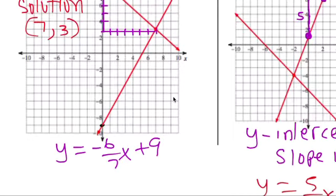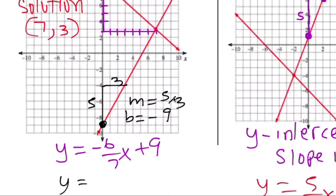We do the bottom one. So the y intercept is negative 9. And the slope is up 4, 5. Up 5 over 3. So the slope is up 5 over 3. So the equation of that line is up 5 over 3 minus 9.